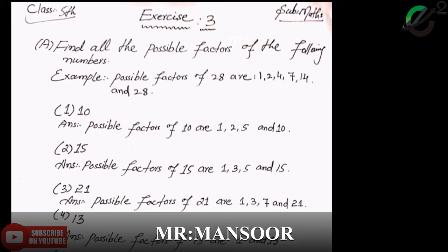Now question number 1, we have to find the possible factors of 10. Answer: possible factors of 10 are 1, 2, 5 and 10.